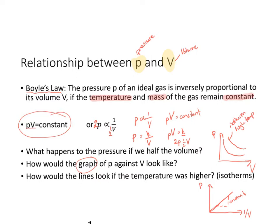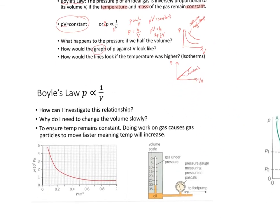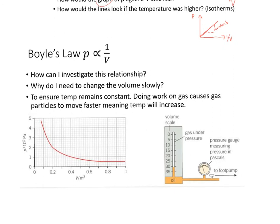How can I investigate this relationship experimentally? This is Boyle's law. For the equipment: you need a volume scale with gas — air — trapped inside under pressure, with oil trapping the air in. There's a long tube connected to a foot pump so you can increase the pressure, and a pressure gauge that measures the pressure in pascals. You increase the pressure on the oil using the foot pump, and the pressure exerted on the air is shown on the pressure gauge, while volume is read from the scale.